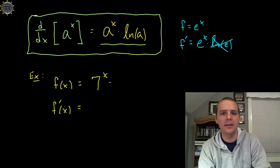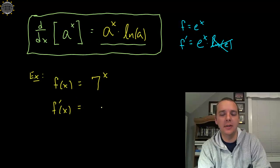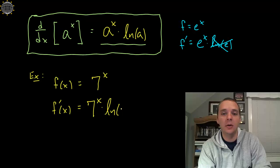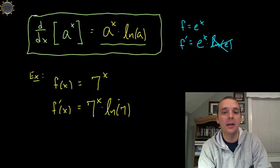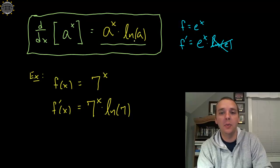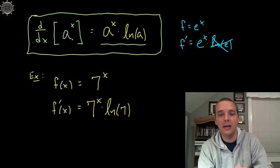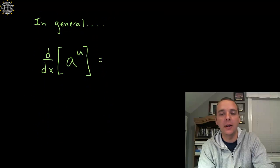So if you have something like 7 to the x, the derivative is 7 to the x times the natural log of 7. The only difference is that the natural log of 7 won't cancel the way the natural log of e does. Just remember we have this supplementary term to add when the base is not e — if it's anything else, any other acceptable base for an exponential function.